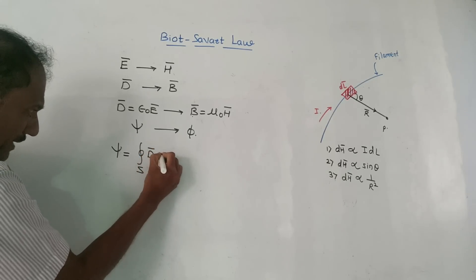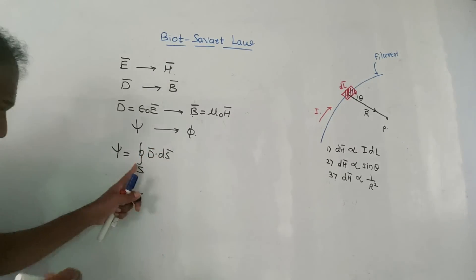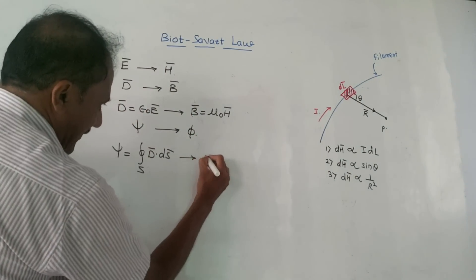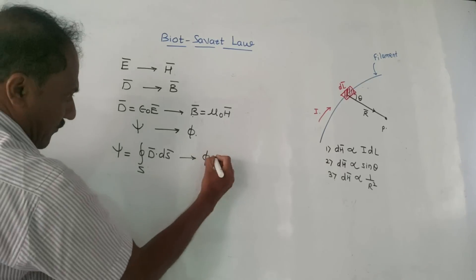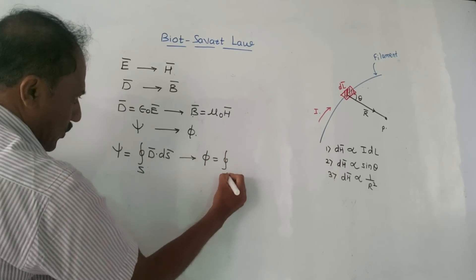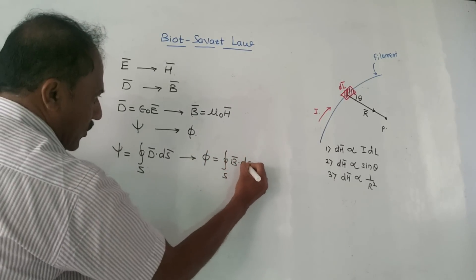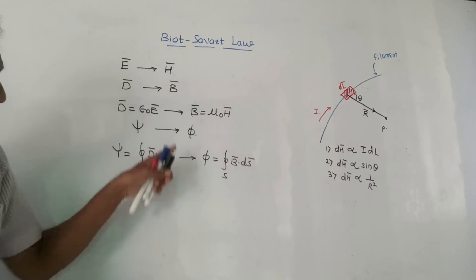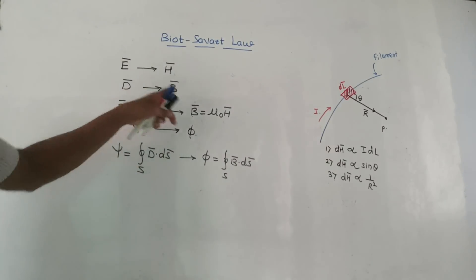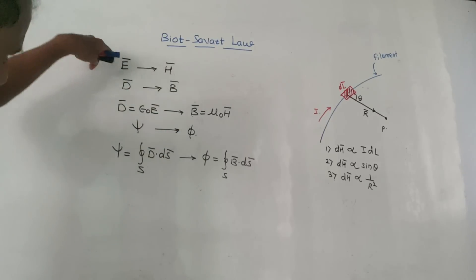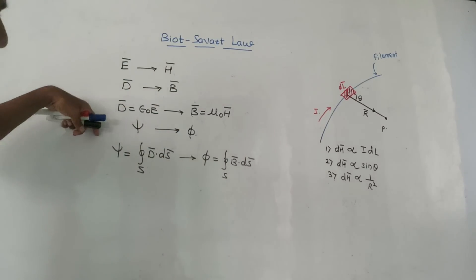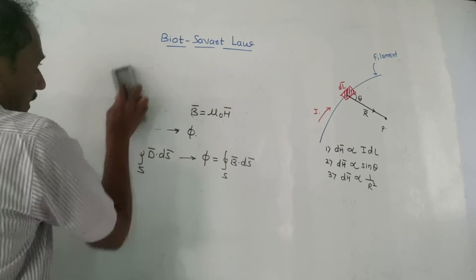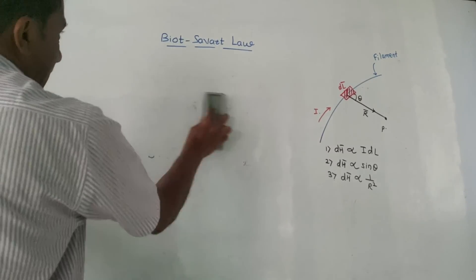We have the Gauss's law formula: psi is the closed surface integration of D bar dot dS. The corresponding equation for magnetic field is: phi equals the closed surface integration of B bar dot dS bar. Remember this trick — the notations on the left-hand side are for electric field and on the right-hand side are the corresponding notations for magnetic field.